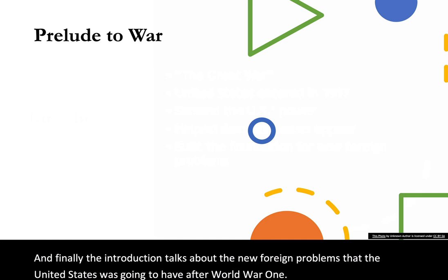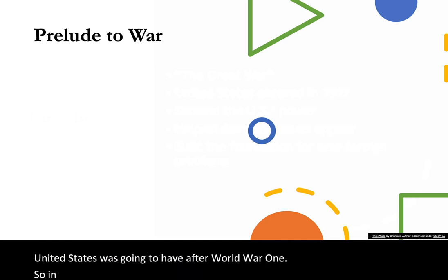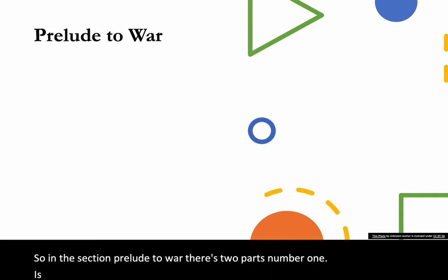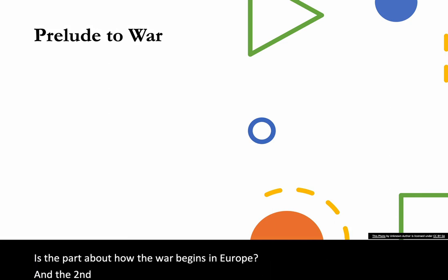In the section Prelude to War, there are two parts. Number one is how the war begins in Europe, and the second part is how the United States gets involved in the war. So let's get into it.